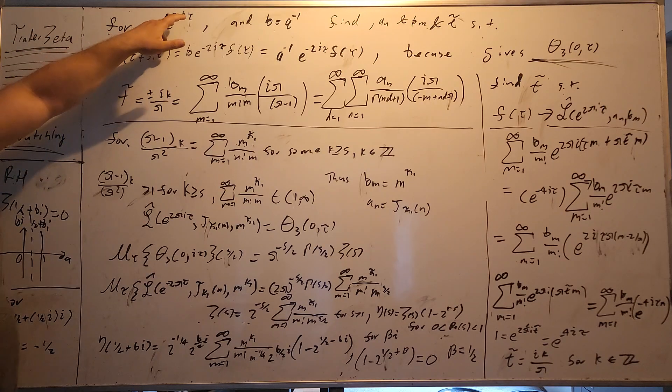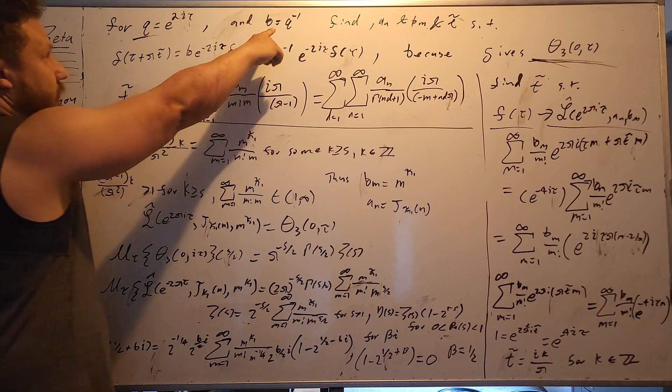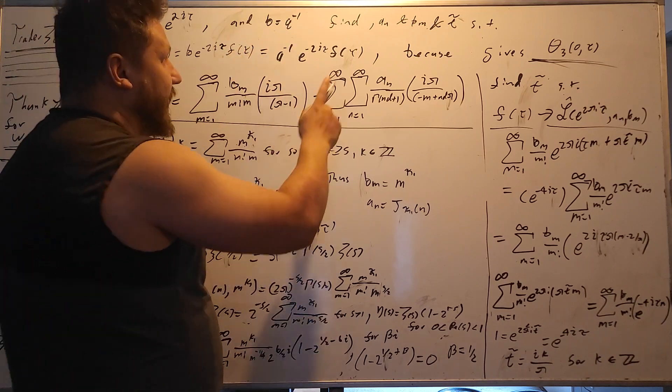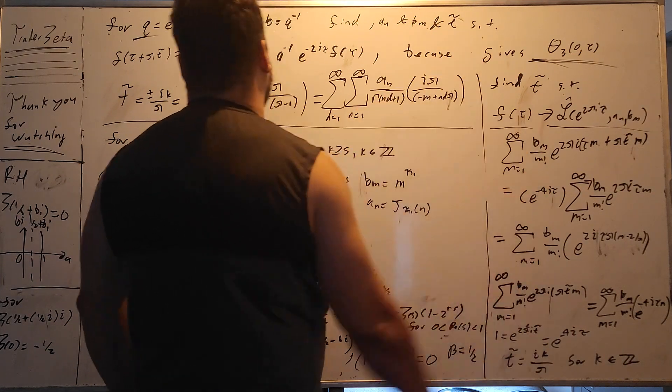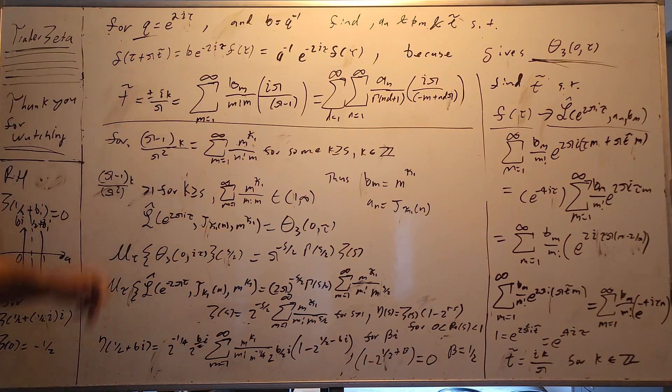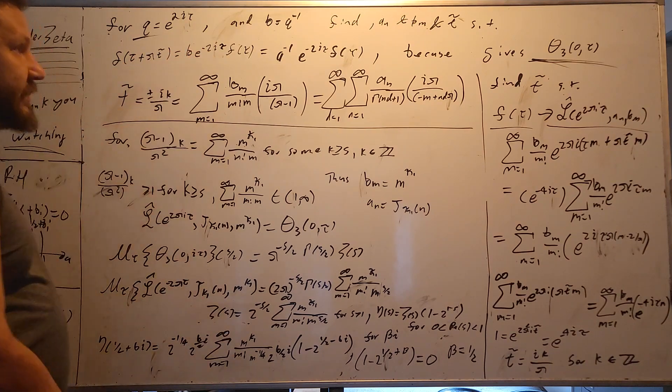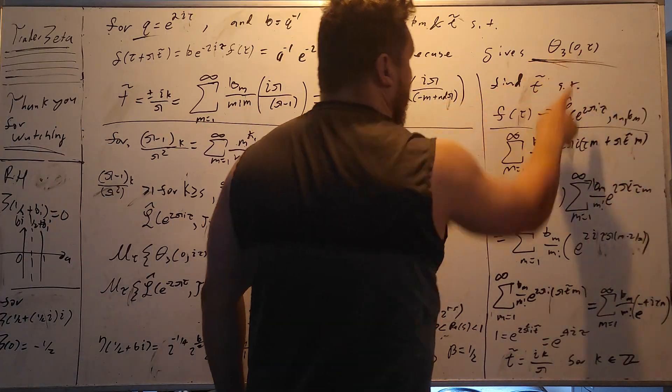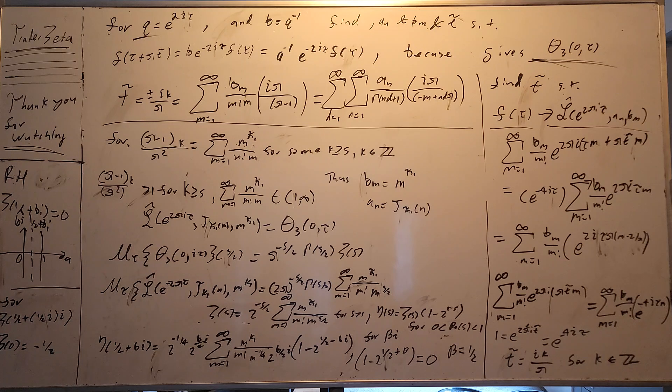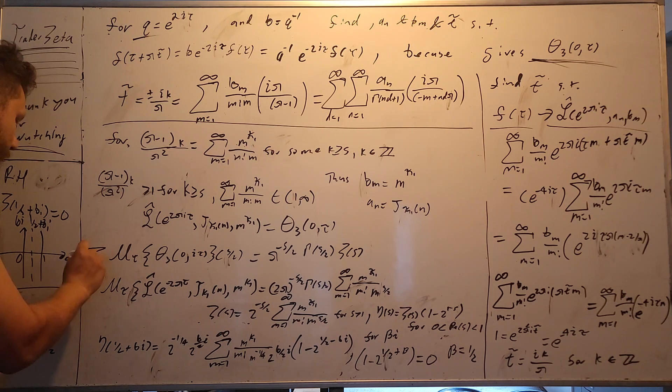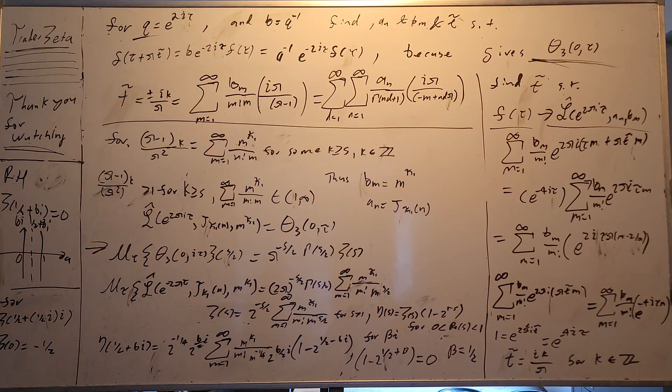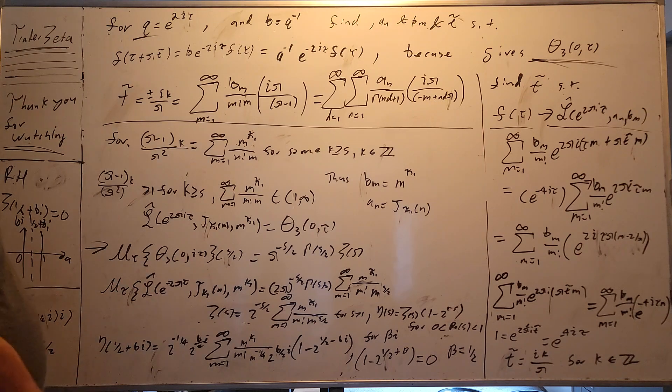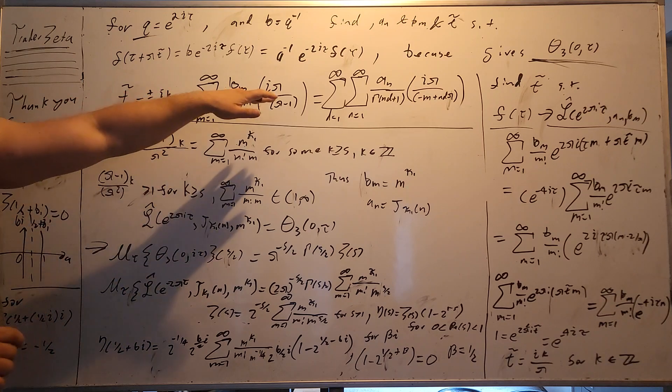we need to find some a sub n and b sub n and t tilde, by definition, such that this functional equation holds. Because if this functional equation holds, what do we have? We have theta 3 of tau. And, to jump really quick ahead, obviously you can see, when we Mellin transform this with an i plugged in, we get functional equation of Riemann's eta function. And that's going to be really useful down the line. So, first, let me explain this scenario right here, and how we got here.